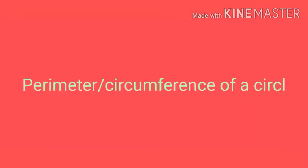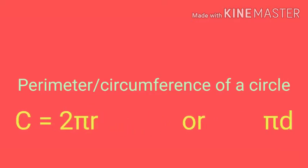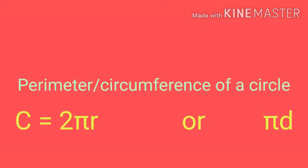The Perimeter of the Circle is also known as the Circumference of the Circle — that means the distance around the Circle, or the Boundary of the Circle. The Perimeter or Circumference is denoted by capital C. So C equals 2 Pi R, or in terms of diameter, Pi D. So, Circumference equals 2 Pi R or Pi D.